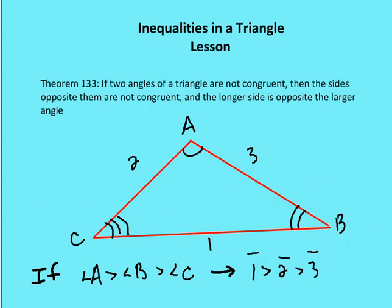We can take this theorem and relate it to angles instead of sides. If two angles of a triangle are not congruent, the sides opposite them are also not congruent, and the longer side is opposite the larger angle. So if angle A is greater than angle B is greater than angle C, then side BC is greater in length than side AC, which is greater than AB. The relative size of the angle determines the relative size of the opposite sides in respective order.